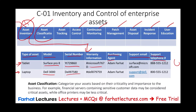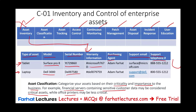We also need to classify our assets — categorizing them based on their criticality and importance to the business. Certain assets contain more sensitive information than others. For example, financial servers containing sensitive customer data might be considered a critical asset. While an office printer may be less critical, it is still important since you print information on it. The point is that certain assets are more critical than others, and you have to classify your assets accordingly.